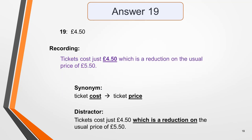Answer 19 is £4.50. In the recording: 'Tickets cost just £4.50, which is a reduction on the usual price of £5.50.' A synonym is used in this sentence — 'ticket cost' for 'ticket price'. It also contains a distractor which could catch you out if you weren't listening very carefully. The distractor phrase is 'which is a reduction on', as the usual price of £5.50 is mentioned first.